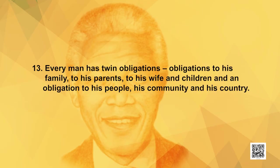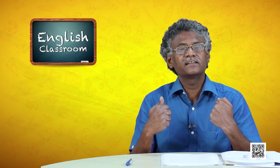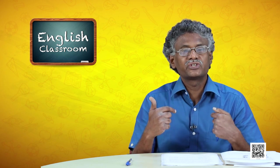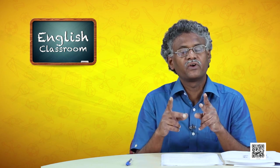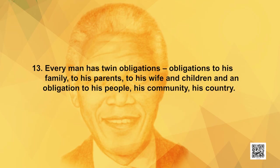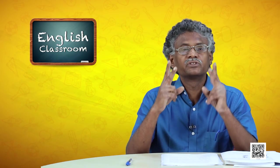Nelson Mandela says every man has twin obligations — obligations to his family, to his parents, to his wife and children, and another obligation to his people, his community, and his country. Learners, we have two obligations in life: one to our family — brothers, sisters, parents — and the other is what we do for our community and the people around us. We should fulfill both obligations.